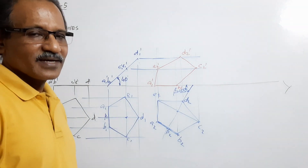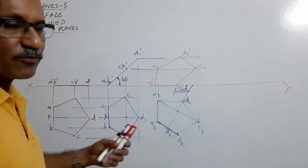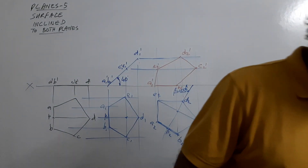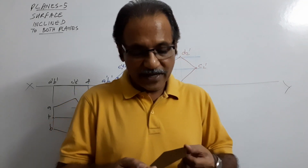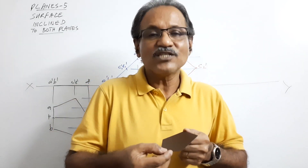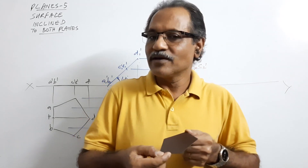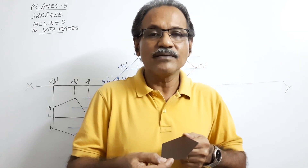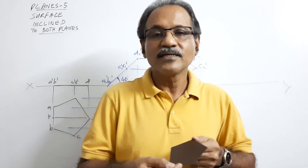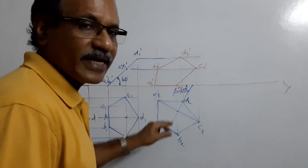That is the first question. The second question from the same problem: instead of giving beta of PD, you can be given phi of PD. What is the difference? Beta of PD is the angle between the plan of PD and the XY line. Phi is the actual inclination of PD to the VP. So instead of beta of PD, you may be given phi of PD, and you have to find out beta of PD to draw the plan.